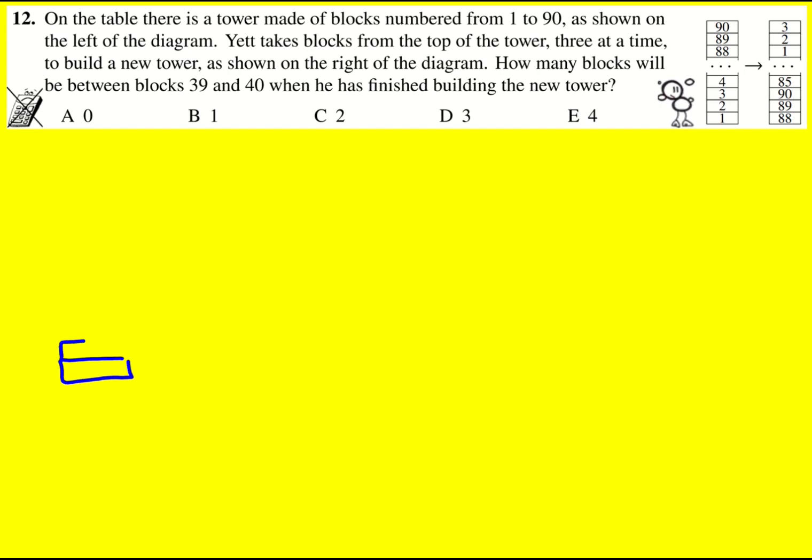I did this question by first thinking about the bottom little set of three. As shown in the diagram, it's going to be 88, 89, and 90, and then the one up from this is going to be 85, 86, 87.